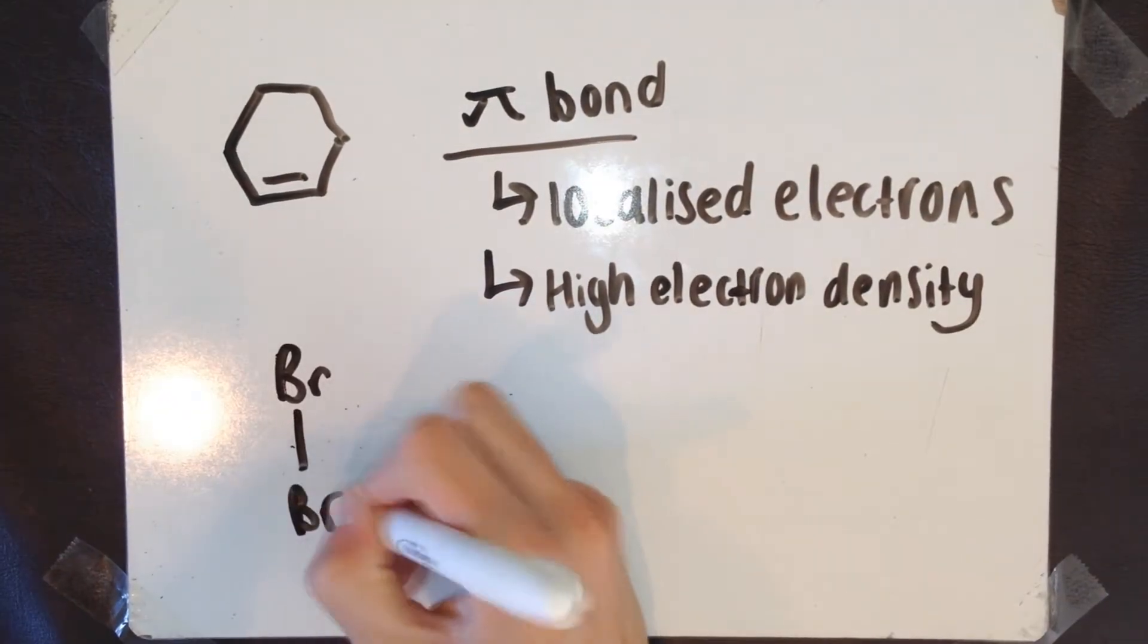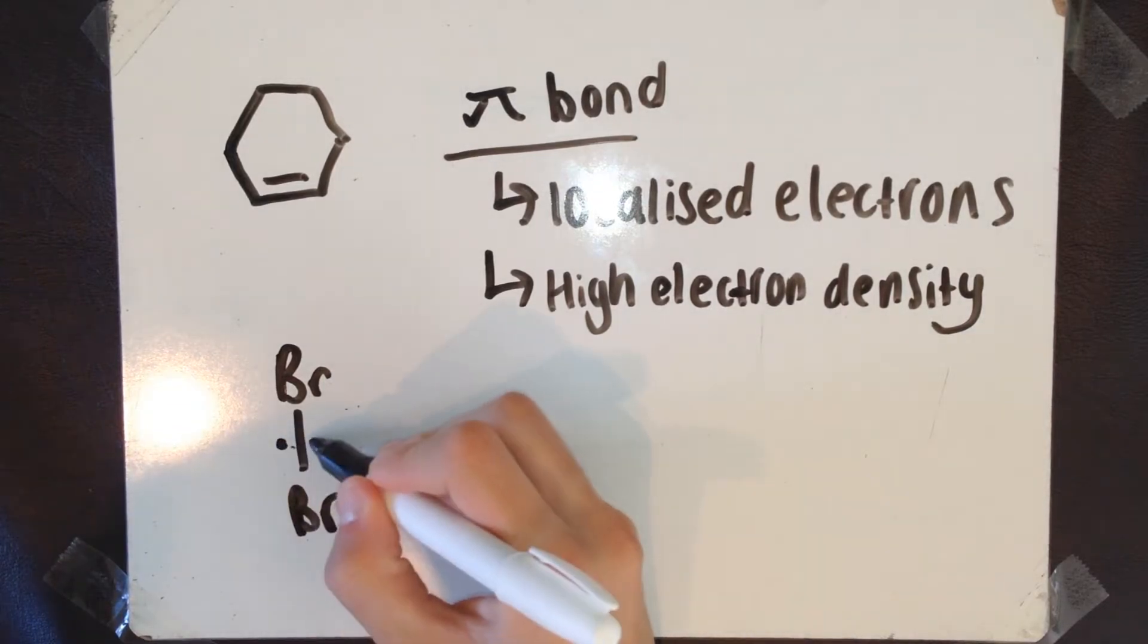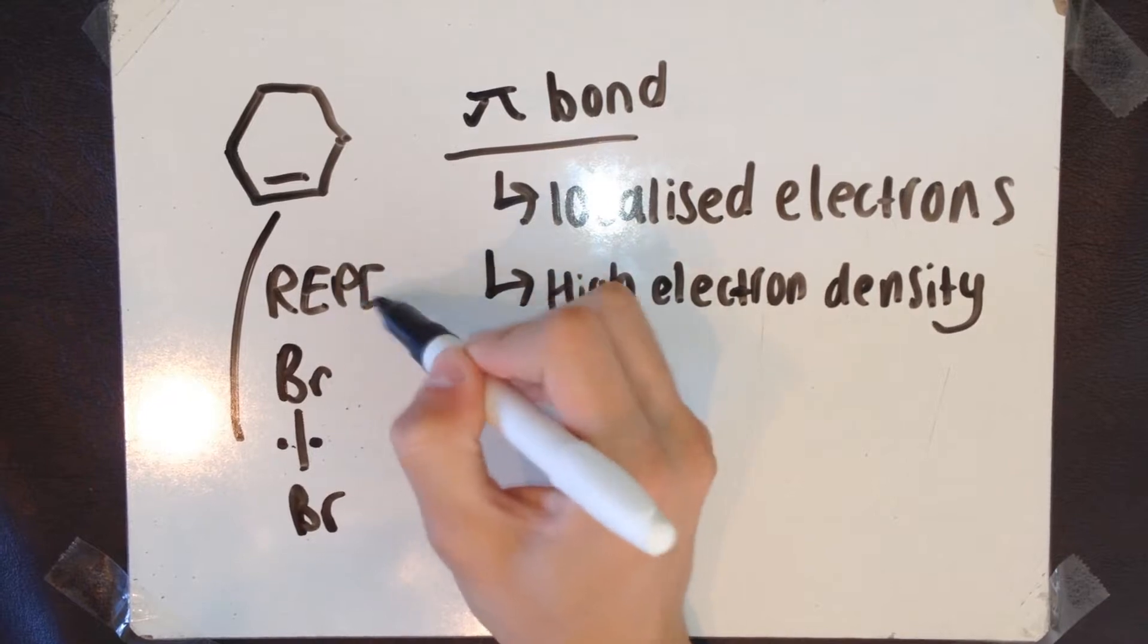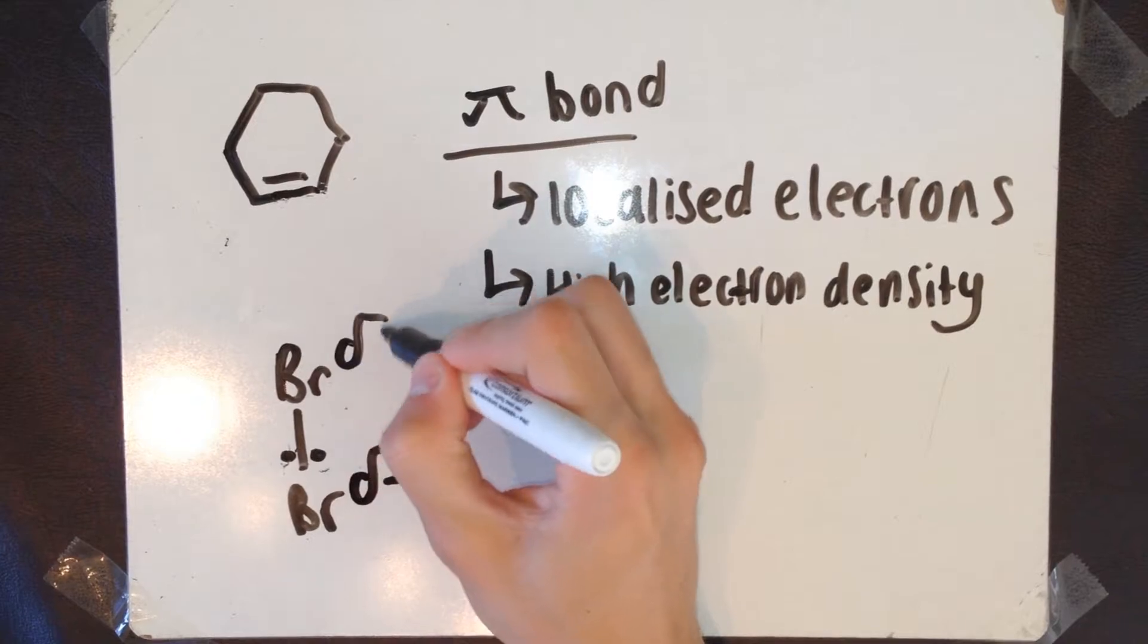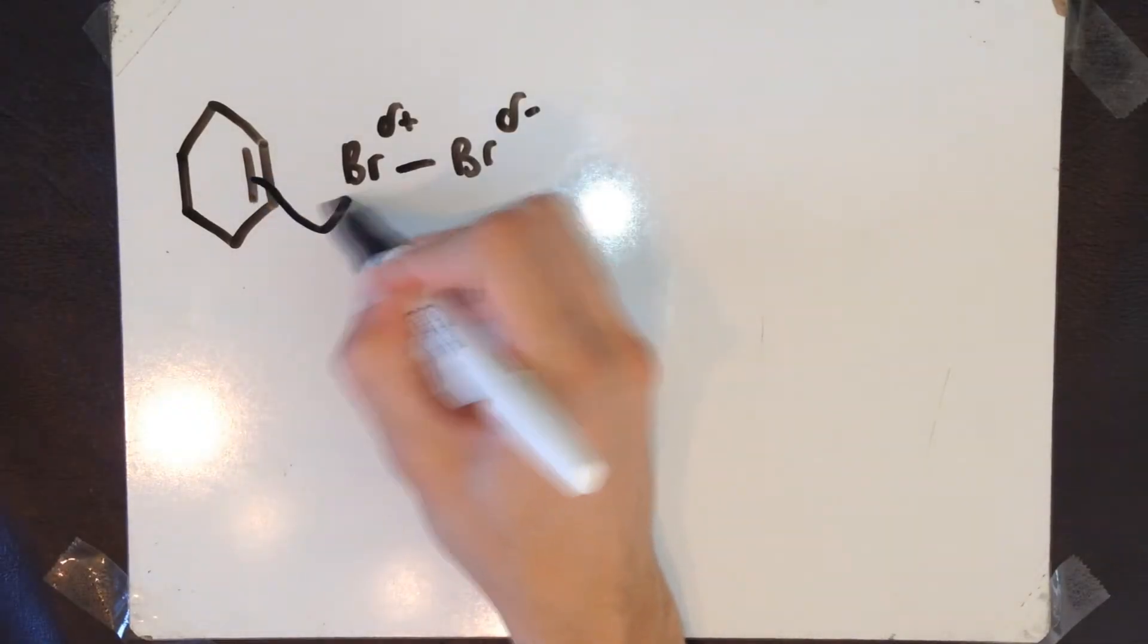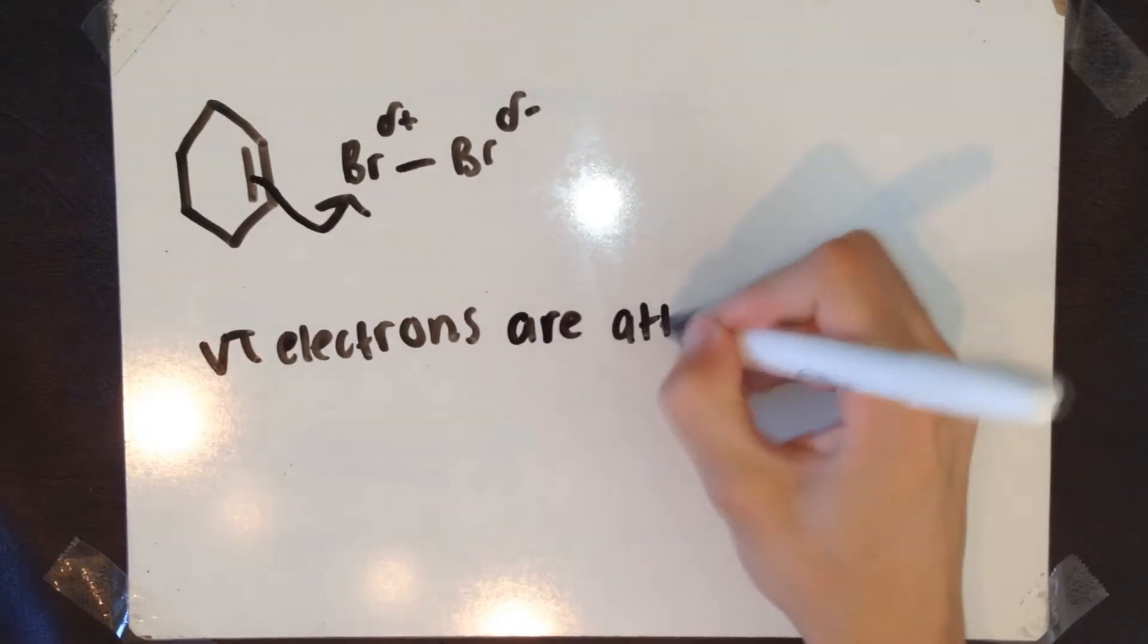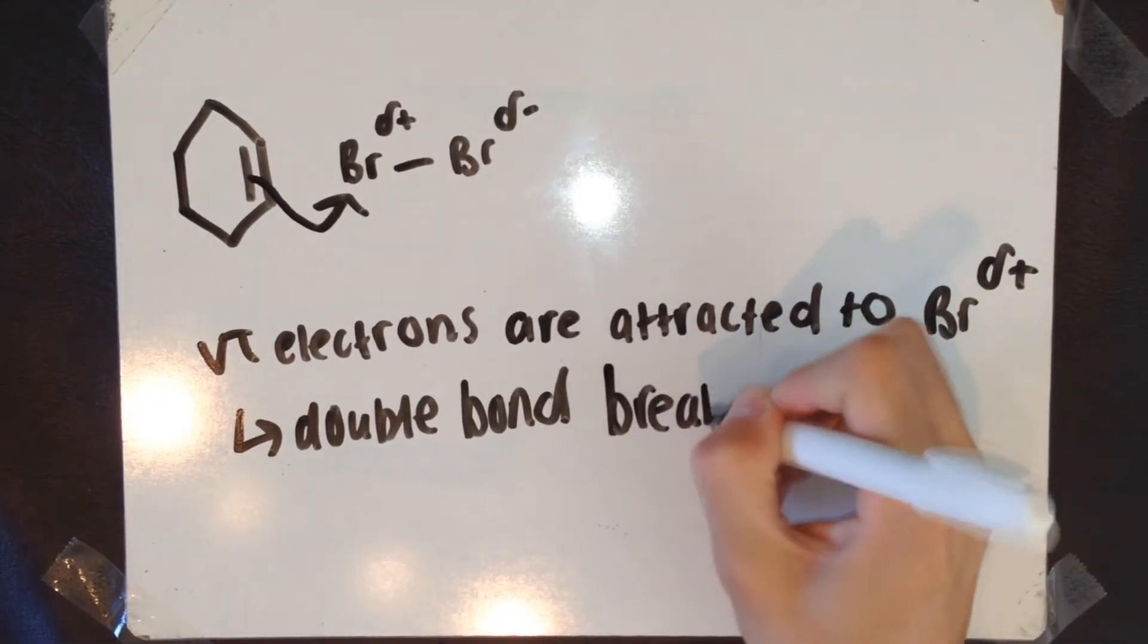When the bromine molecule comes about, the electrons in the pi bond repel the electrons in the Br2 bond. This induces a dipole in the Br2 molecule. One end becomes slightly negative, the other becoming slightly positive. The pi electrons from the double bond are attracted to the slightly positive bromine. This causes the carbon-carbon double bond to break.